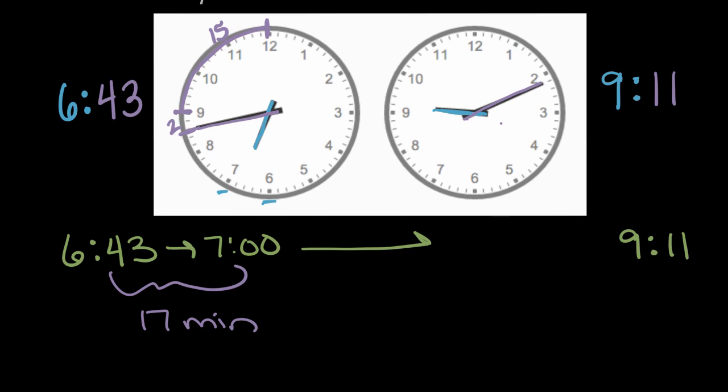Then from seven, let's stick with the hours for a second—let's just get from seven to nine o'clock. At seven o'clock, the hand is at the top. It'll go all the way around one hour to be eight o'clock, all the way around another hour to be nine o'clock. So that's a total from seven to nine of two hours.